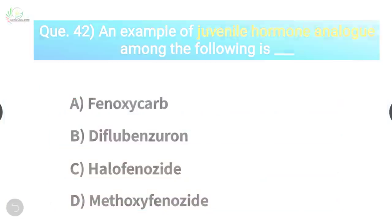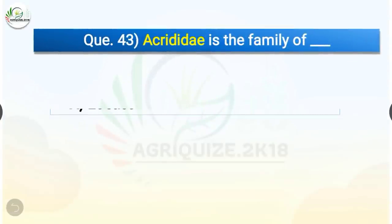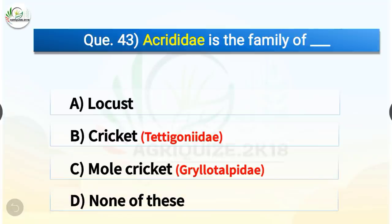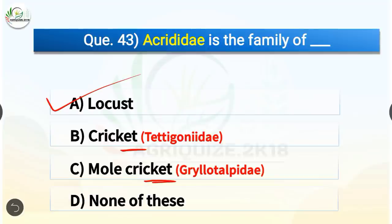Question number 43. Acrididae is the family of which insect? The options are locust, cricket, mole cricket, or none of these. The correct answer is option A, locust. Acrididae is the family of locusts, whereas Tettigoniidae is the family of cricket, and Gryllotalpidae is the family of mole cricket.